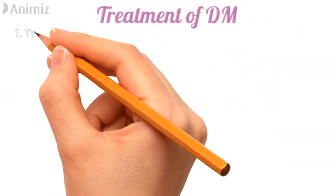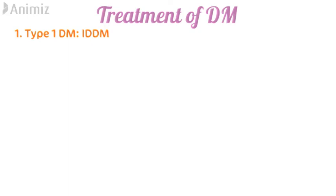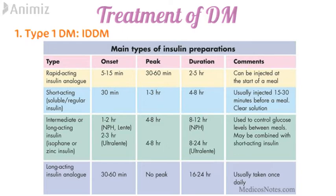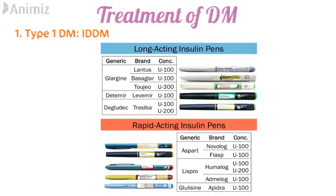Now let's see the treatment of diabetes mellitus. For Type 1 diabetes, which is insulin-dependent, the beta cells fail to produce insulin, so insulin must be taken externally. There are four main types of insulin preparations available, classified by their onset and duration of action: rapidly-acting, short-acting, intermediate-acting, and long-acting insulin analogues. Examples of long-acting insulins are glargine, detemir, and degludec; rapidly-acting insulins include aspart, lispro, and glulisine. Since insulin is a peptide molecule, it cannot be taken orally as it would be degraded in the GI tract, so these insulin analogues are administered subcutaneously or intramuscularly.